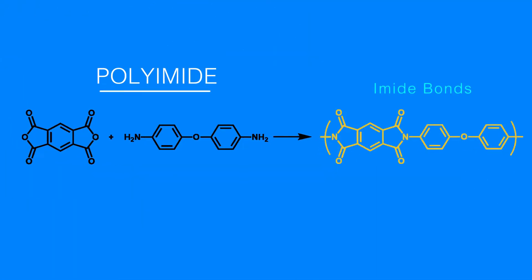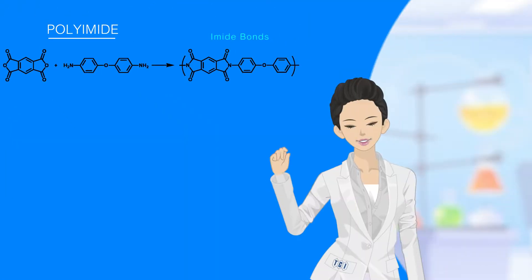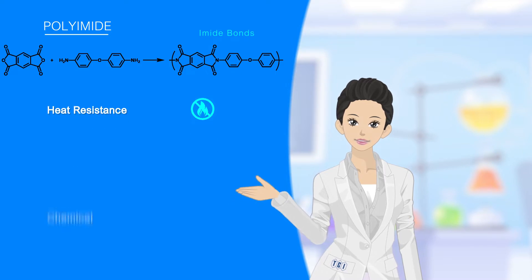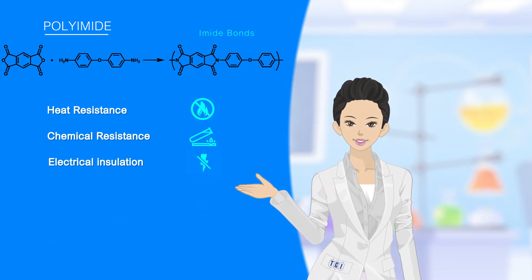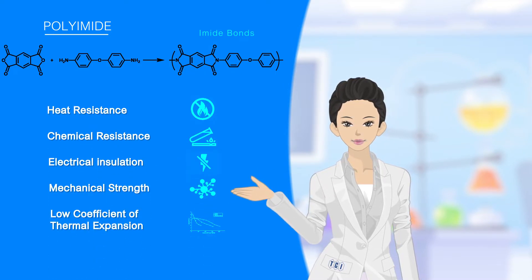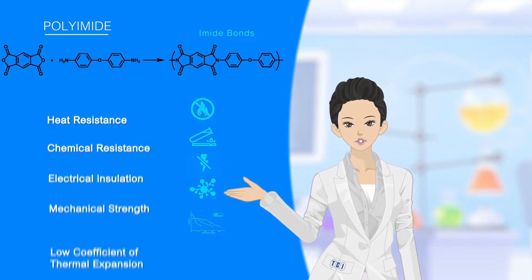Polyimide is a generic name of polymers with imide bonds. They have excellent heat resistance, chemical resistance, electrical insulation, mechanical strength, and low coefficient of thermal expansion.